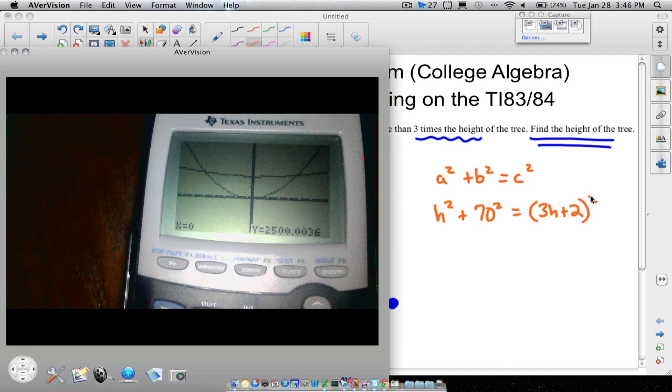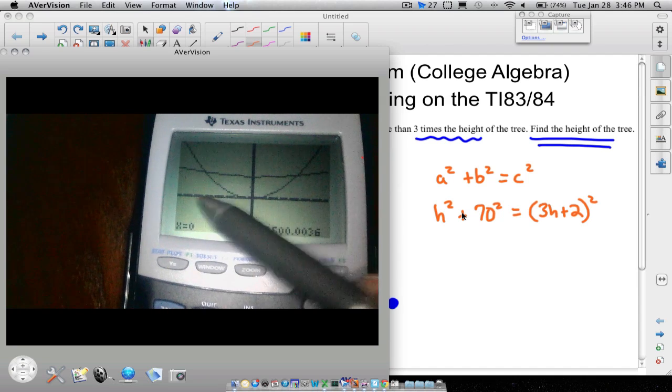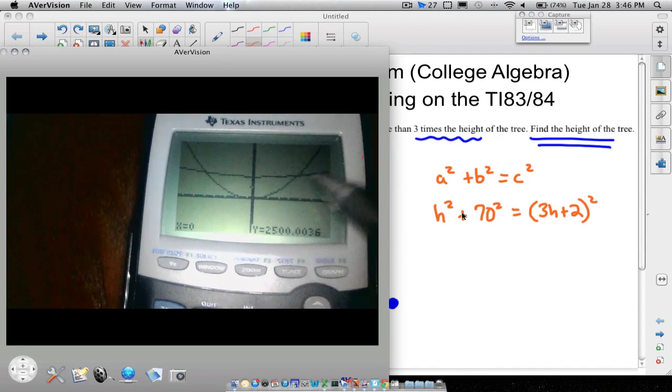Now remember, the goal was to find the height of the tree. We did use h for the height. But now since we went to the calculator, we actually ended up using x instead of h. So we're trying to find a value of x at these intersections. However, I don't want to use this one because notice x is negative on this side of the y-axis. I want this one right here.